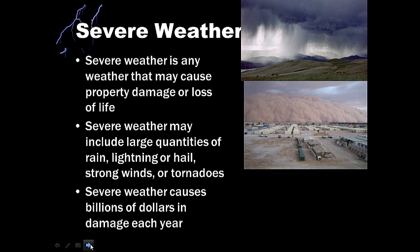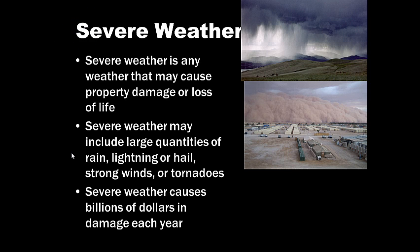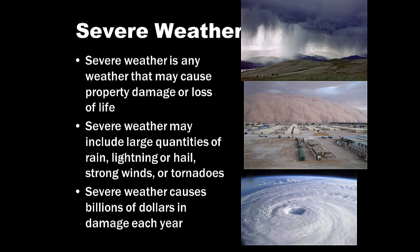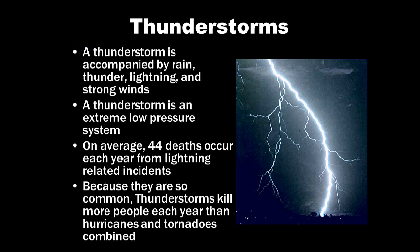Severe weather is any weather that may cause property damage or loss of life. It may include large quantities of rain, lightning, hail, strong winds, or tornadoes. Most people don't realize that lightning storms cause more damage than hurricanes or tornadoes combined because they're so frequent — severe weather causes billions of dollars in damage each year. A thunderstorm is accompanied by rain, thunder, lightning, and strong winds. On average, 44 deaths occur each year from lightning-related incidents, and thunderstorms kill more people each year than hurricanes and tornadoes combined.